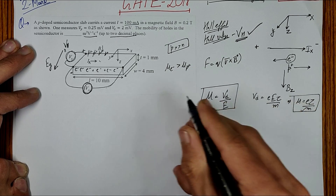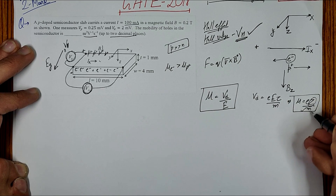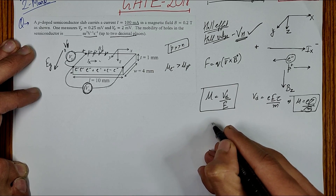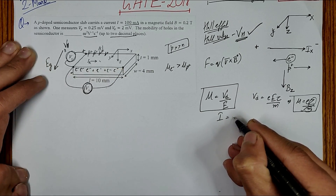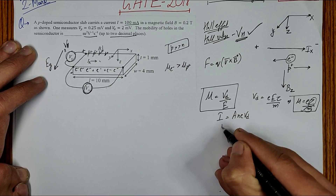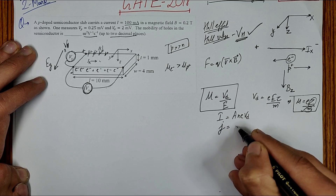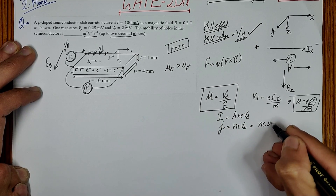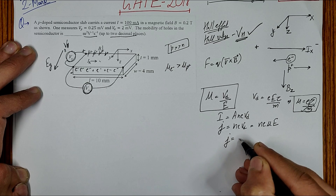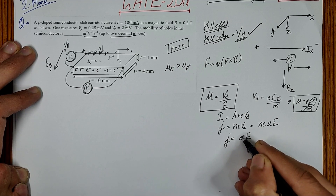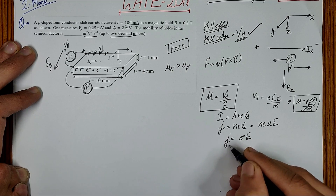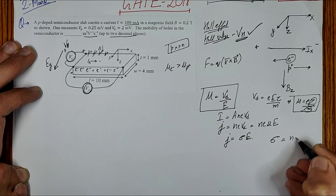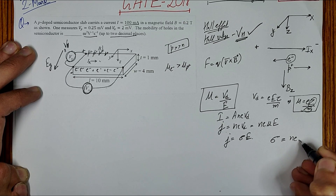We cannot use the relaxation time formula because we don't know the relaxation time τ or the mass m. So we look for another formula. Current in a semiconductor is I = A·n·e·Vd, and current density J = I/A = n·e·Vd. Since Vd = μE, we get J = n·e·μ·E. Also J = σ·E, so comparing: conductivity σ = n·e·μ.